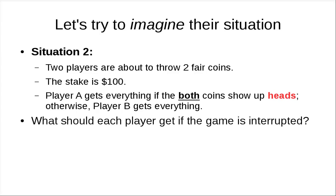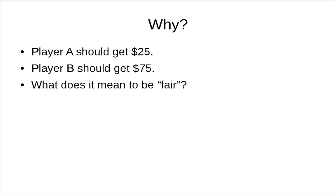Let's look at another example. In this second situation, you have two players and they are about to throw two fair coins. The stake is again $100. Player A gets everything if both coins show up heads; otherwise, Player B gets everything. So what should be the fair division of the stake? Player A should get $25 and Player B should get $75. Why, and why is this fair?